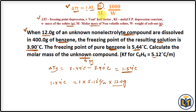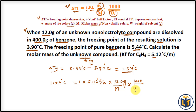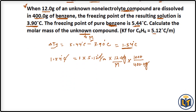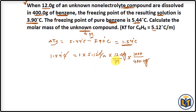M is the molar mass of the solute, which is what we are calculating. We then multiply by 1000 and divide by the mass of the solvent — benzene — which is 400.0 grams. The gram units cancel out and the degree Celsius units cancel out.